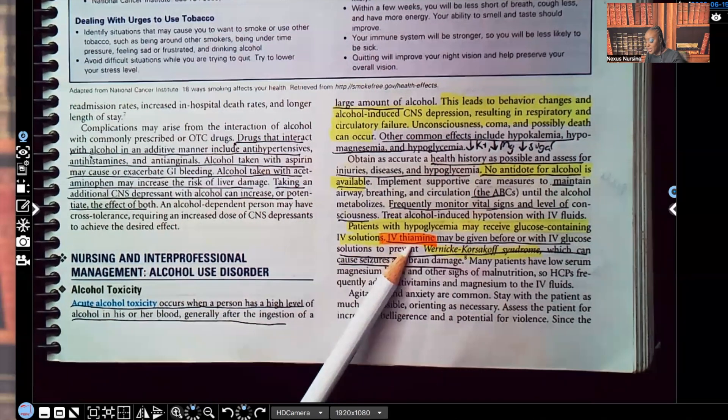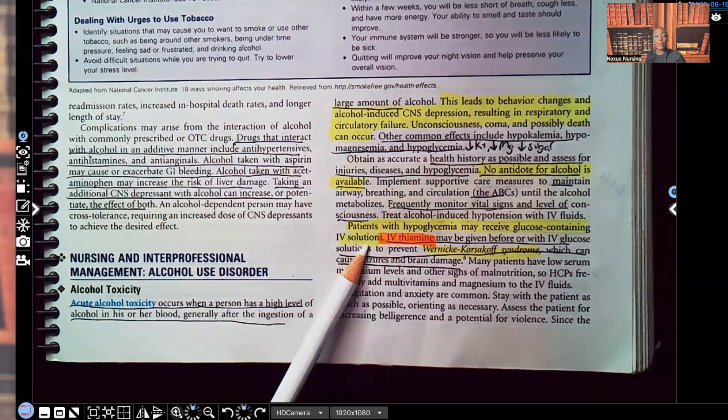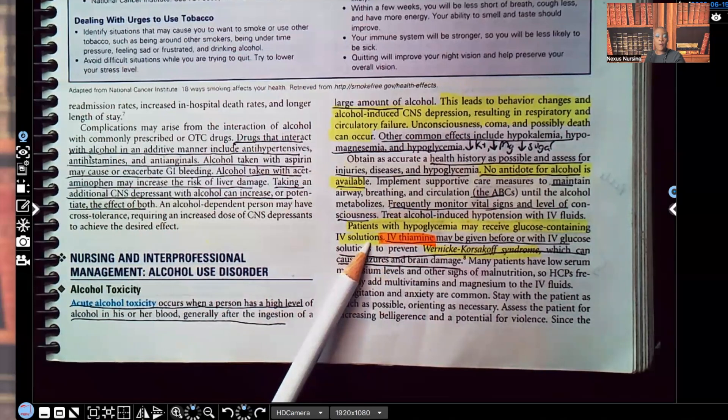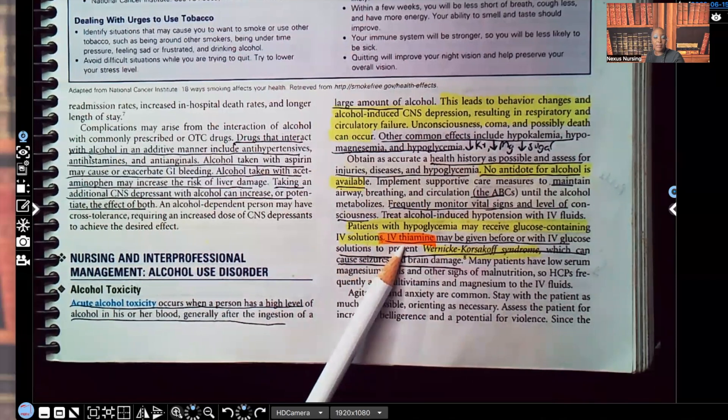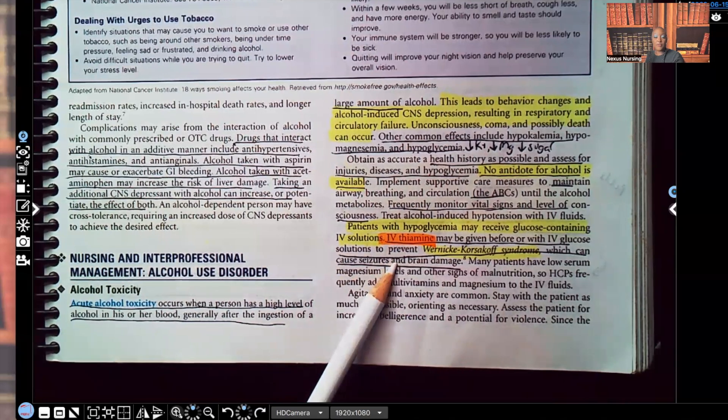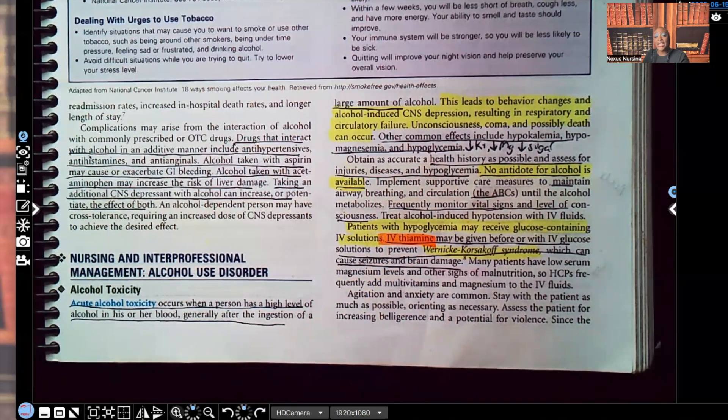Patients with hypoglycemia may receive glucose containing IV solutions. Hypoglycemia is going to be one of your top priorities for a patient that's going through alcohol intoxication, alcohol toxicity. IV thiamine may be given before or with IV glucose solutions to prevent what's known as Wernicke-Korsakoff syndrome. And that can cause seizures and even brain damage. Let me tell you something, those heart muscles and brain muscles, they don't regenerate. So once it dies, it dies.